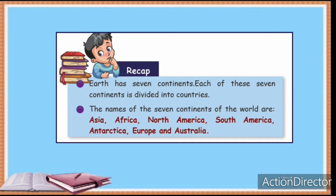The first continent is Asia. Asia is the largest continent in terms of size and population. India and China are in Asia — they are Asian countries. Mount Everest, the highest peak in the world, is situated in the Himalayan mountains. Many important civilizations — the Indus civilization, Mesopotamian civilization — were born in Asia. Countries in Asia include Japan, Singapore, Malaysia, Saudi Arabia, Sri Lanka, Nepal, and Pakistan. Our country India is also in Asia.